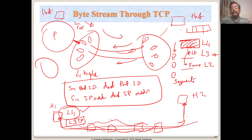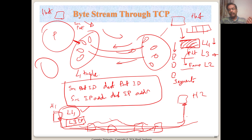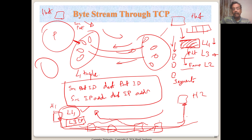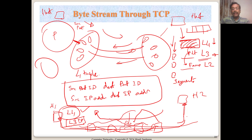L4 divides data from the application — for example, an email with a gigabyte attachment — into smaller pieces called segments. It's a byte stream: it could be video, audio, a file, or a continuous stream. Whatever order L4 sends these segments, they may not be delivered in the same order at the other end, because they can take different paths at the L3 IP level.